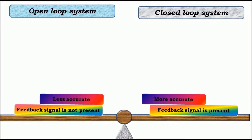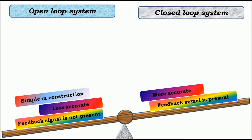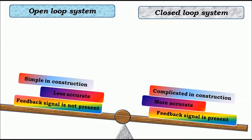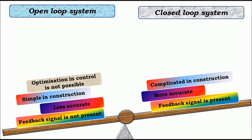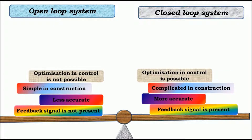The third difference is open loop systems are simple in construction, whereas closed loop systems are complicated in construction. The fourth difference is in open loop systems, optimization in control is not possible, while in closed loop systems, optimization in control is possible.